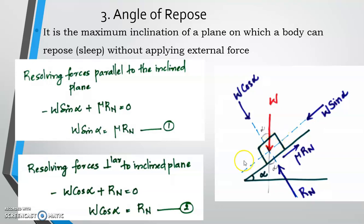If you can move the body downwards, the maximum angle at which the body can rest without applying an external force — that maximum angle is called the angle of repose.